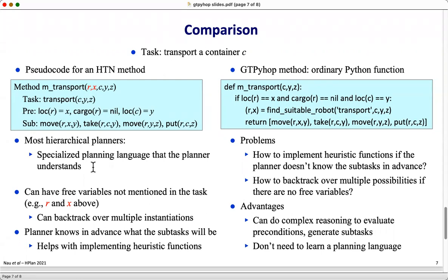Often there can be free variables not mentioned in the task. For example, what robot you're going to use in order to transport the container and where does that robot start at? Depending on how many robots you have in your domain, you may be able to backtrack over multiple instantiations of this method if the first one doesn't work.